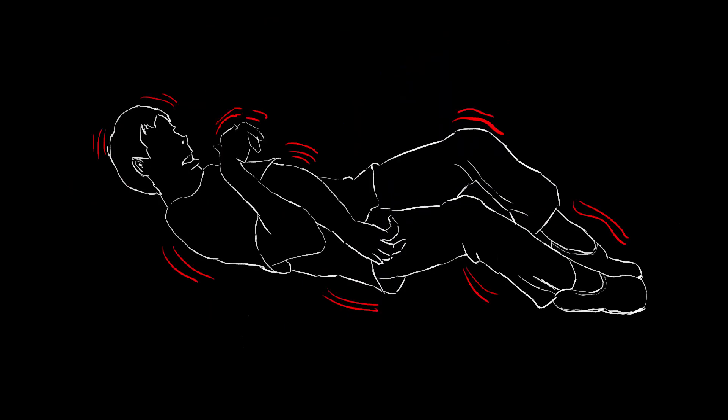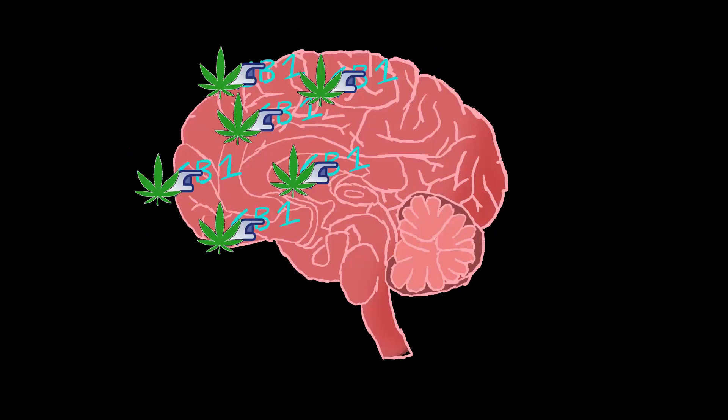As an antispasmodic in MS or spinal injury. Why? Marijuana poking CB1 receptors and decreasing motor activity.